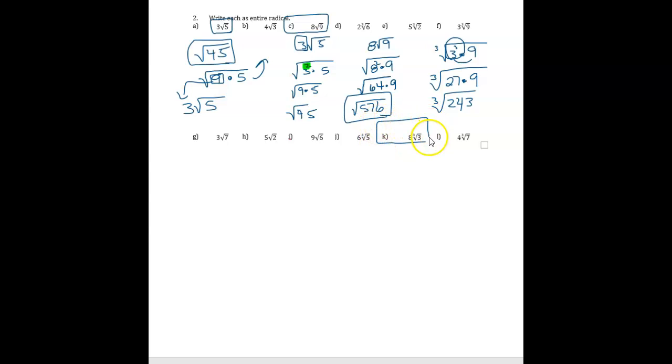Try this one. Try K. So we would write cube root. 8 is written underneath. So it's 8 cubed times the 3 that's already there. So 8 cubed. 8 times 8 times 8. It's 512. So this should give us 1536.